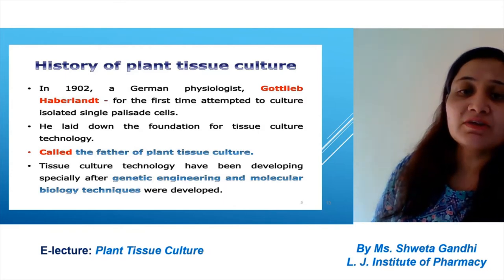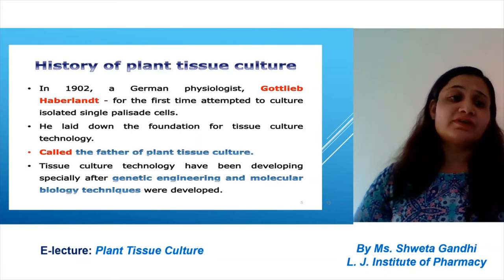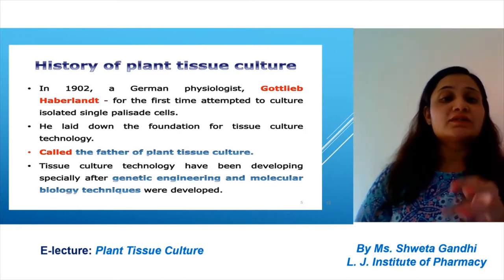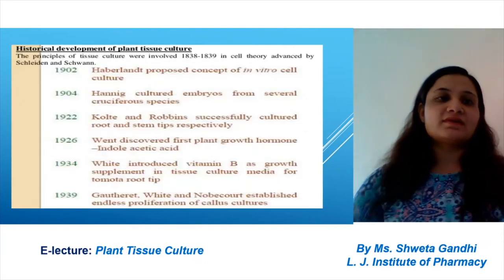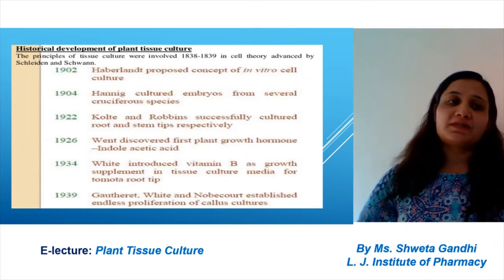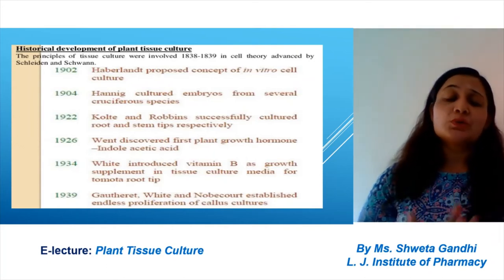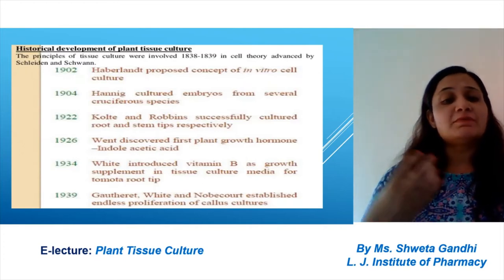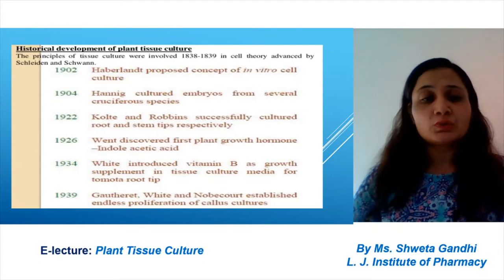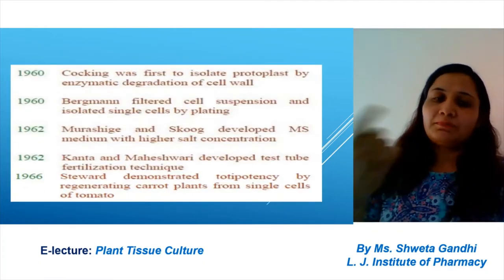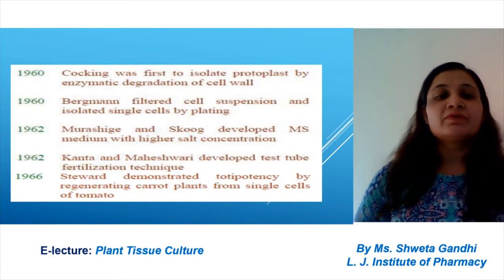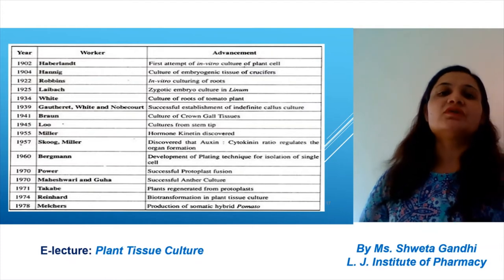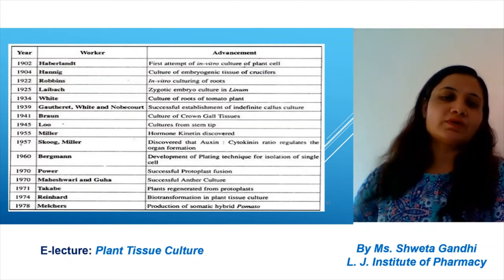Now the history: different scientists performed different experiments. In 1902 a German scientist first attempted culture of isolated tissue. Different advancements include root tip development, cruciferous species embryo culture, vitamin B introduced as a supplement leading to root tip culture production. The Murashige and Skoog medium is an important medium with higher salt concentration, developed in 1962. You should know about seven to eight key scientists and their advancements.